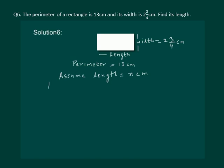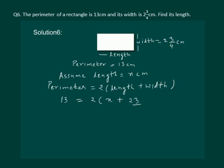The perimeter of a rectangle is equal to 2 times the quantity length plus width. Let us substitute the values: 13 is equal to 2 into x plus 2 and 3 by 4. We know that 2 and 3 by 4 is a mixed fraction, so it comes out to be 11 by 4.